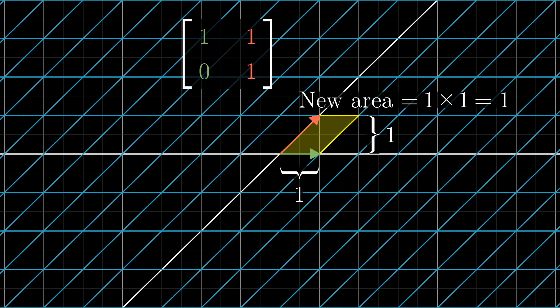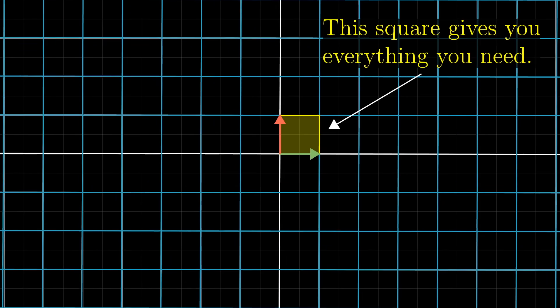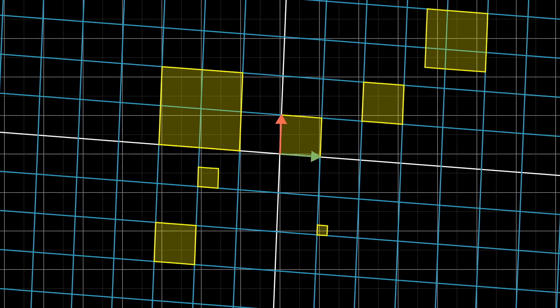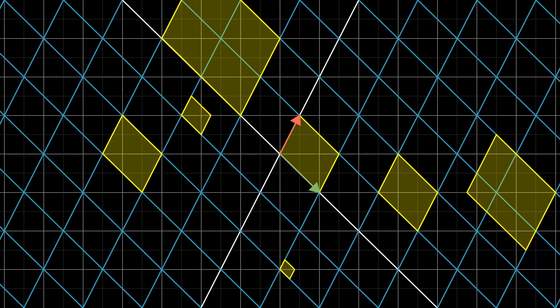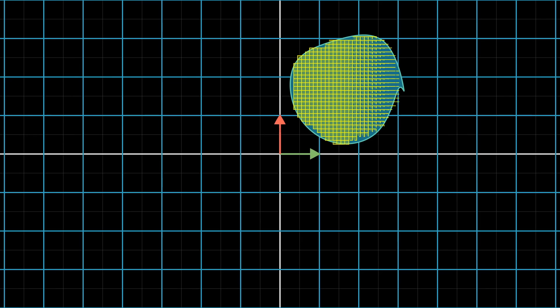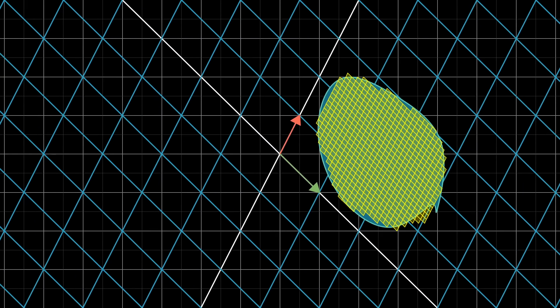So even though this transformation smushes things about, it seems to leave areas unchanged, at least in the case of that 1 unit square. Actually though, if you know how much the area of that 1 single unit square changes, it can tell you how the area of any possible region in space changes. For starters, notice that whatever happens to one square in the grid has to happen to any other square in the grid, no matter the size. This follows from the fact that grid lines remain parallel and evenly spaced. Then, any shape that's not a grid square can be approximated by grid squares pretty well, with arbitrarily good approximations if you use small enough grid squares. So, since the areas of all those tiny grid squares are being scaled by some single amount, the area of the blob as a whole will also be scaled by that same single amount.